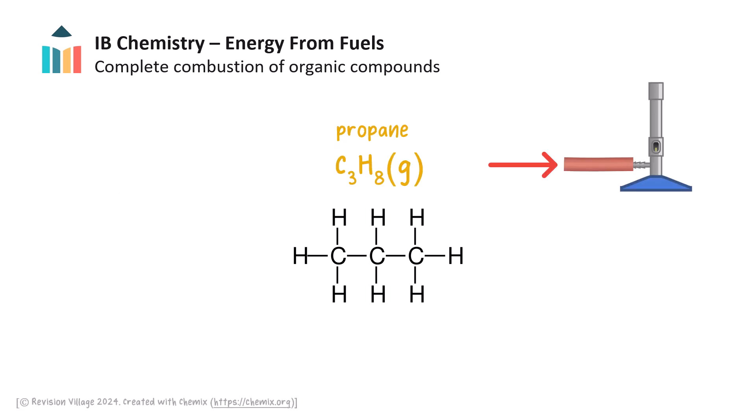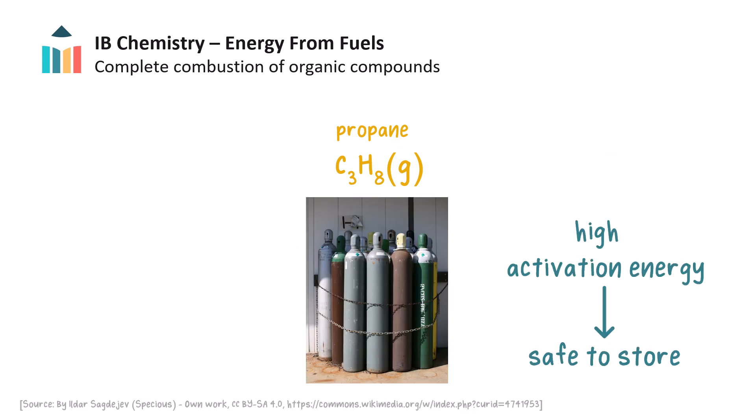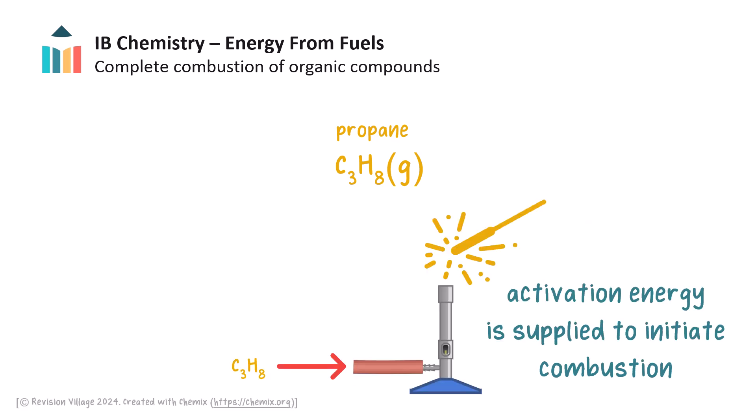This alkane, propane, is used as the fuel in Bunsen burners. Organic compounds such as propane have high activation energy, meaning they require an initial energy input, called the activation energy, to get the reaction going, so these fuels can be safely stored until needed. We can use a match or flint to supply this activation energy to ignite the propane fuel.